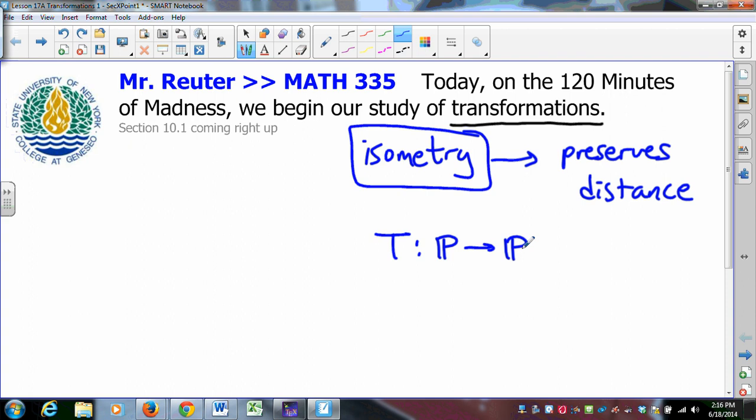whatever distance there is between A and B, well that's the same distance from the image of A to the image of B. If A and B are four units apart, then the image of A and the image of B are four units apart. That's the way that goes.